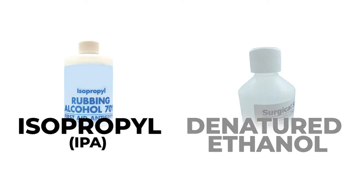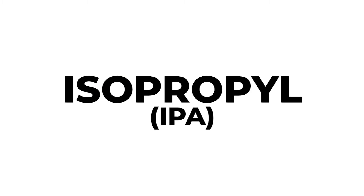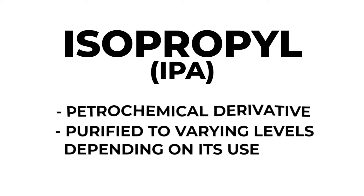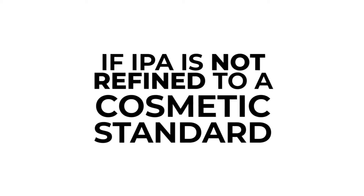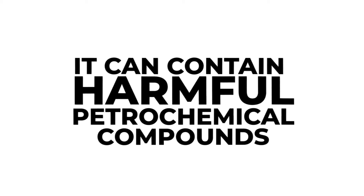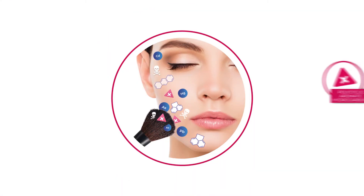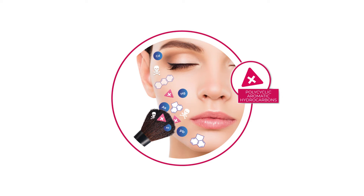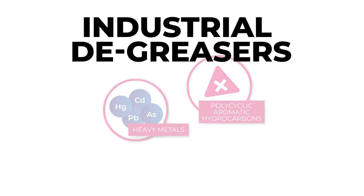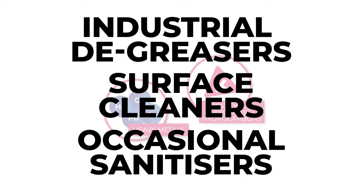Now let's look at isopropyl alcohol. Isopropyl alcohol, also referred to as IPA, is a petrochemical derivative, purified to varying levels depending on its use. If IPA is not refined to a cosmetic standard, it can contain harmful petrochemical compounds such as polycyclic aromatic hydrocarbons and heavy metals. These non-cosmetic solvents are intended to be used as industrial degreasers, surface cleaners and occasional sanitizers.